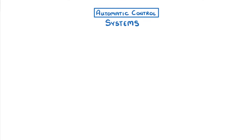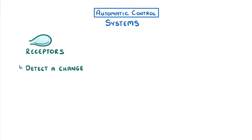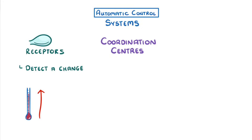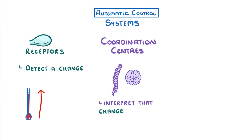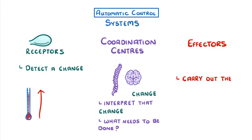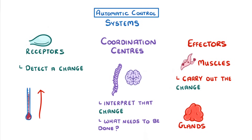Automatic control systems have three main components to know about. Receptors, which detect a change such as a rise in temperature. Coordination centres, such as the brain or spinal cord, which interpret that change and decide what needs to be done about it. And finally, effectors, which are the things that carry out the change — generally either muscles that might contract, or glands that can release hormones.